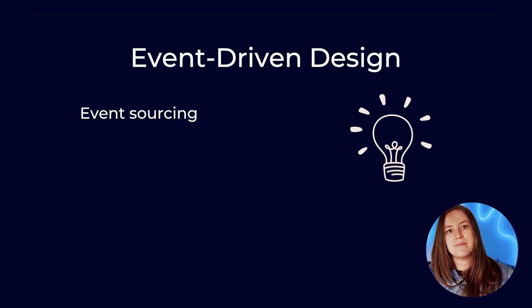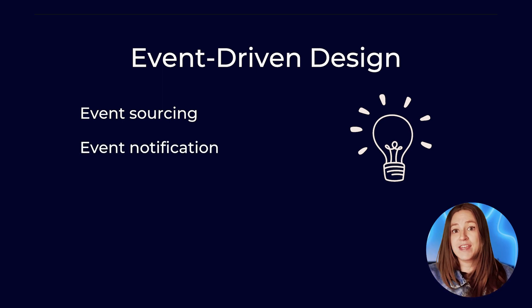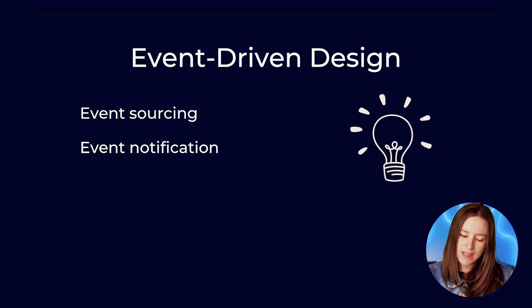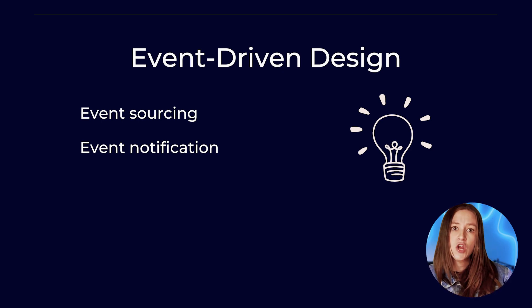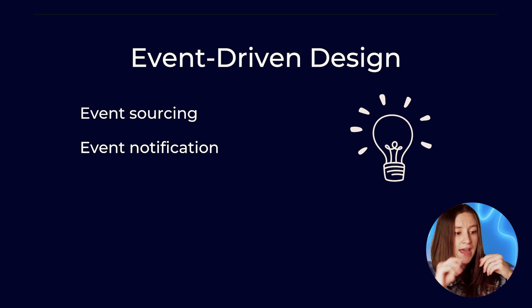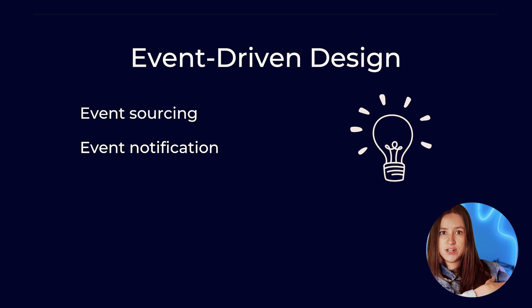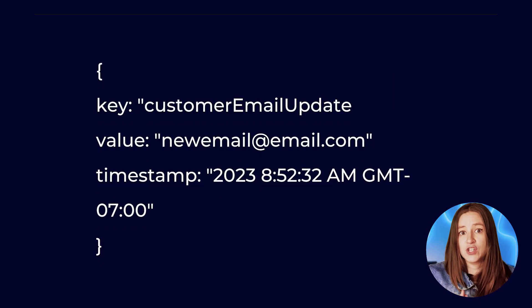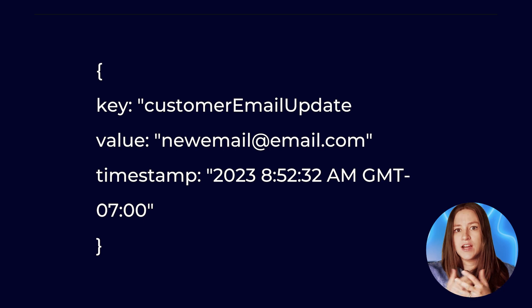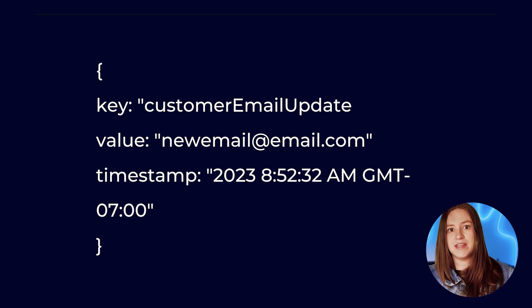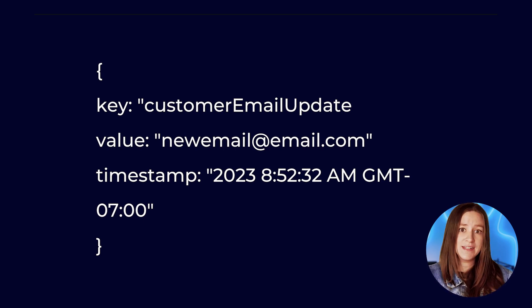Next up, you have event notification. Event notification describes a pattern where you've got part of your architecture listening for an event and then executing logic in reaction to it. So you might have an event called 'customer email update' with a new customer email represented in an e-commerce data pipeline.